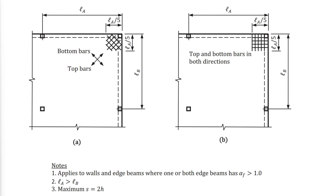Whenever a corner slab is supported by stiff elements such as walls or edge beams with αf greater than 1 as defined in the previous video, corner reinforcement must be provided because there will be higher bending moments in those regions. Corner reinforcement must be provided at both the top and bottom of the slab and should be designed to resist the maximum positive factored moment in the slab panel per unit width. The reinforcement can be placed diagonally or parallel to the edges, extending a distance of La/5 from the corner, where La is the longer side of the panel.